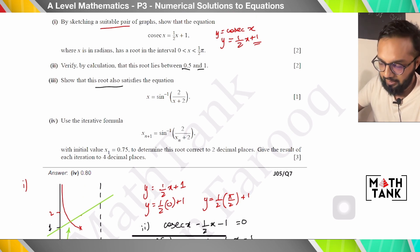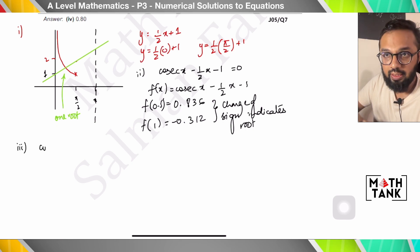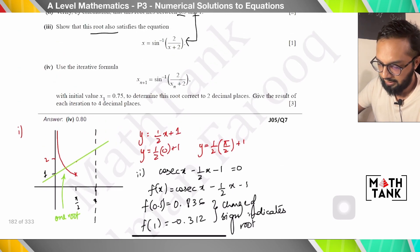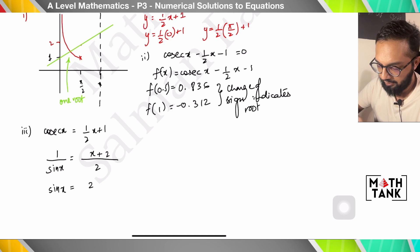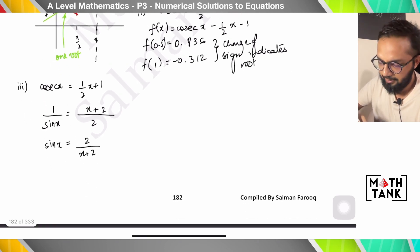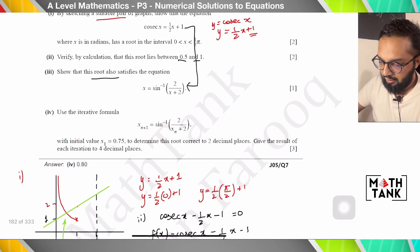Part 3 says show that this root also satisfies the given equation. I need to show the roots are the same. Starting from cosec x = ½x + 1, I take the LCM: this becomes (x + 2)/2, so sine x = 2/(x + 2) when I reciprocate. Therefore x = sin⁻¹(2/(x + 2)), which is the required equation.